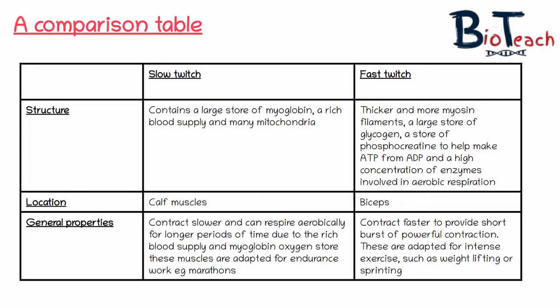Slow twitch muscle fibres are located in the calf muscles, for example, though they're found throughout the body. In terms of their general properties, they contract slower and respire aerobically for longer periods compared to fast twitch. They can respire aerobically because they have a really rich blood supply and a myoglobin oxygen store, allowing a constant supply of oxygen during exercise. In comparison, fast twitch muscles have much more myosin filaments and a larger store of glycogen.